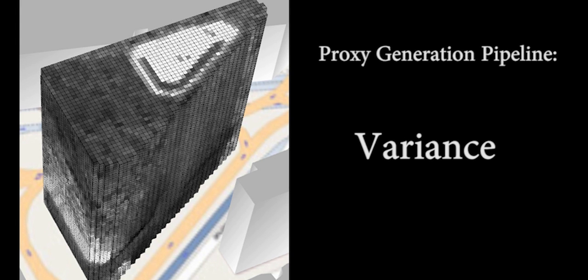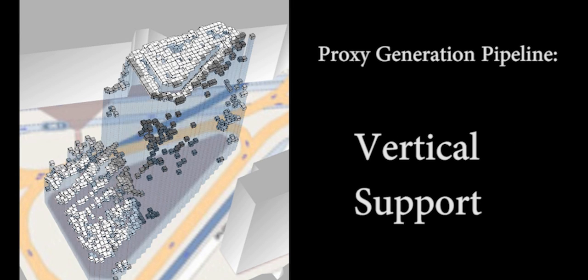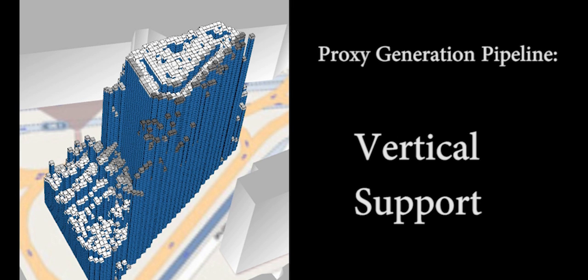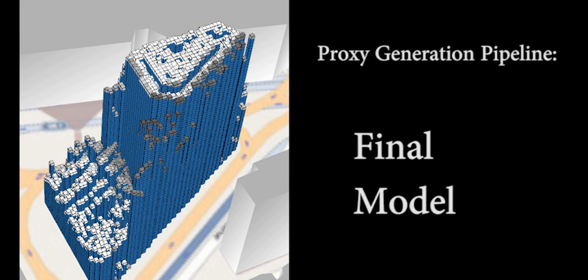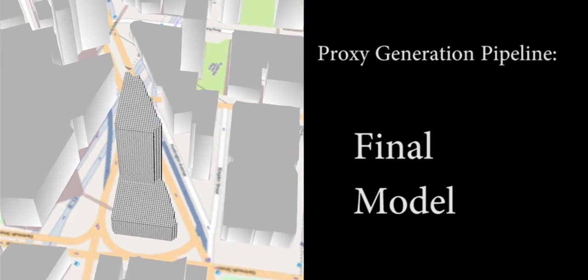We compute a per-voxel weighted photoconsistency measure, choose the most consistent voxel per column, and complete the model by vertically supporting the chosen voxels. Finally, we cluster and filter to obtain the final 2.5D proxy model.